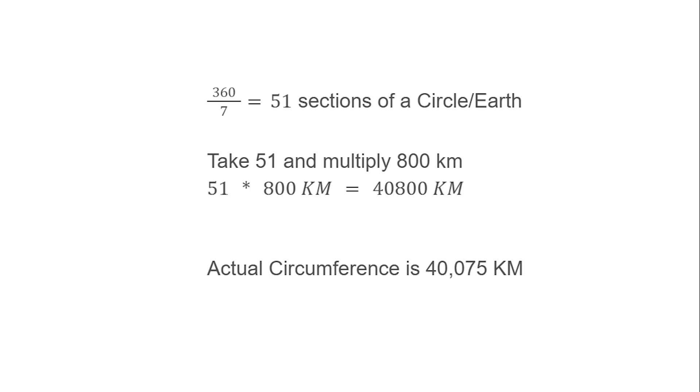He took 360 and divided by 7, which is the degree that we had in the other image, and that equals 51 segments of a circle. And you take that 51 and multiply it by the distance that the guy walked, which was 800 miles. So that would be 51 times 800, and it's roughly around 40,000 kilometers, somewhere around there. He was off by like 4 or 5 percent.